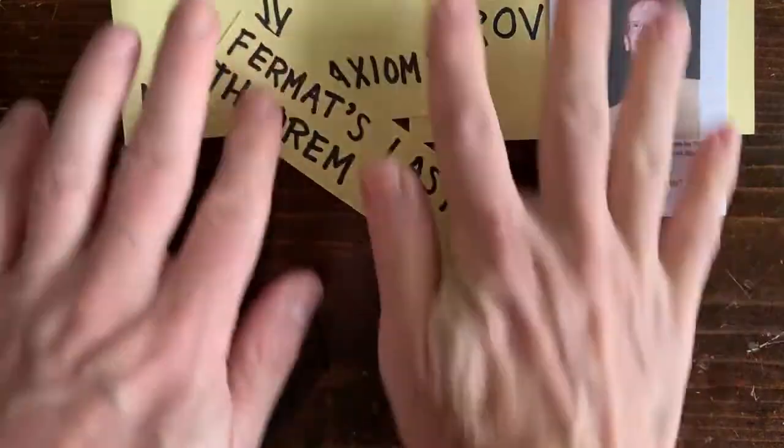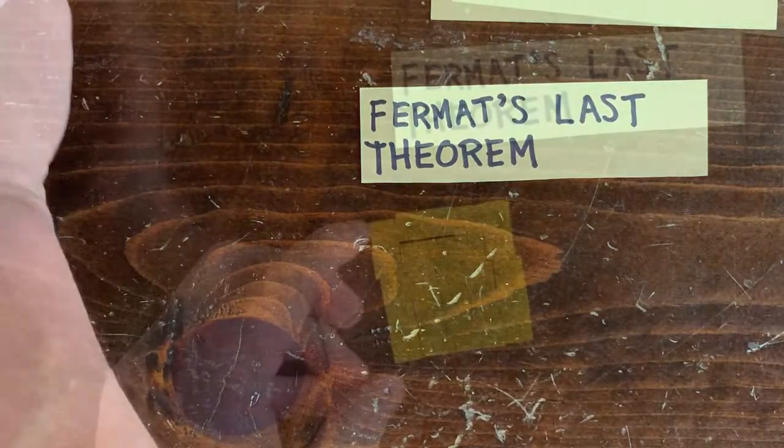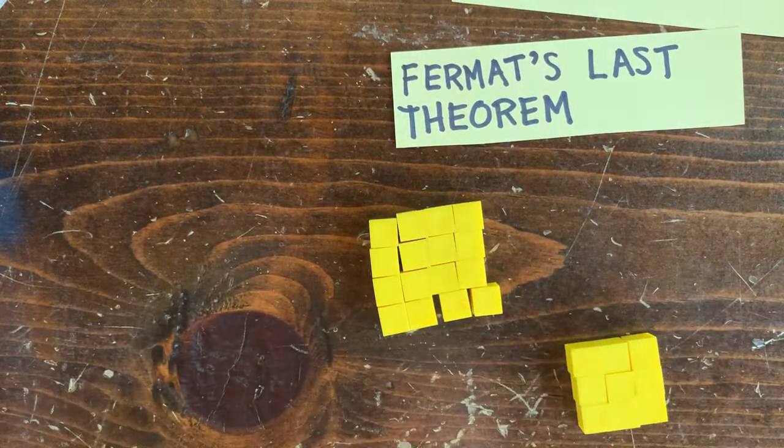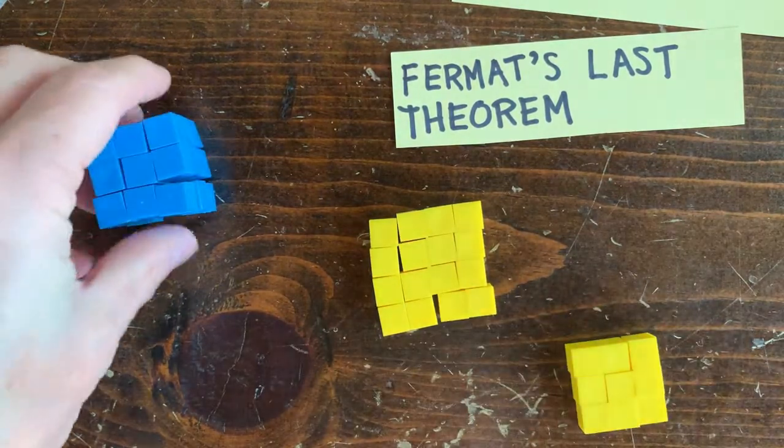I like Fermat's Last Theorem. It basically says there's a square I can bust into two smaller squares. But is there a cube I can bust into two smaller cubes? I can't seem to do it with this one.